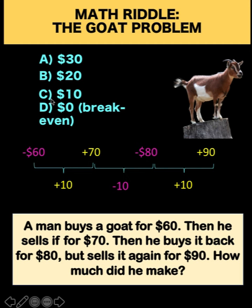Why are some people answering $10? Their reasoning is: you have a profit of $10, then you lose $10 — that's zero — and then you profit again $10, so the final profit is $10. The problem with this reasoning is that this $10 and this negative $10 are different money. The negative $10 is additional money coming from the man, and you cannot simply subtract these two because you need to keep track of where those monies are coming from.